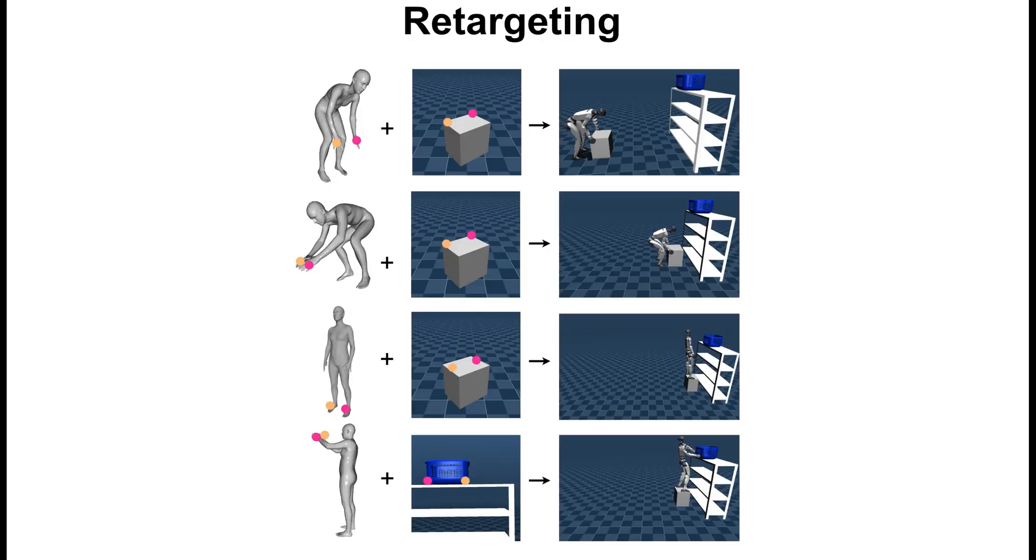Third, we extract the 3D poses of the depicted humans in the generated images and use them along with the previously transferred contacts to perform an inverse kinematics retargeting to obtain the keyframes that guide the trajectory optimization.